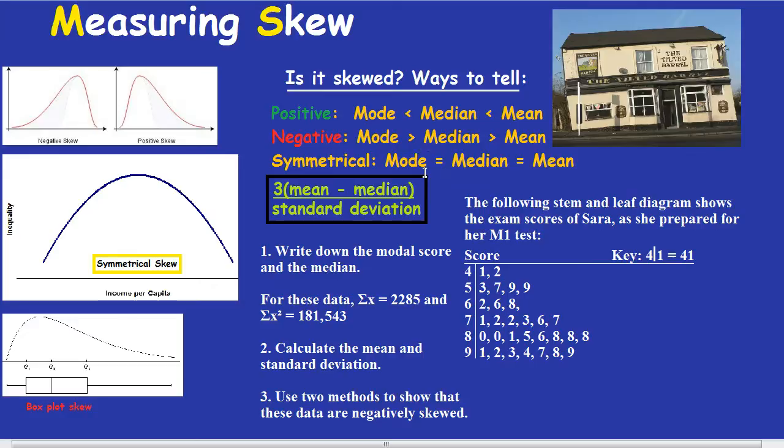Let's do an actual question. You get a fair few marks for this, so it's worth knowing. The following stem and leaf diagram shows the exam scores of Sarah as she prepared for her M110. And you can see from the data that her scores are getting better, and she's probably going to end up with 100%.